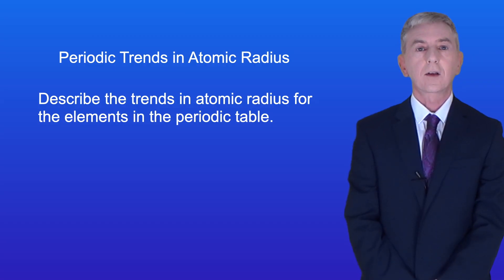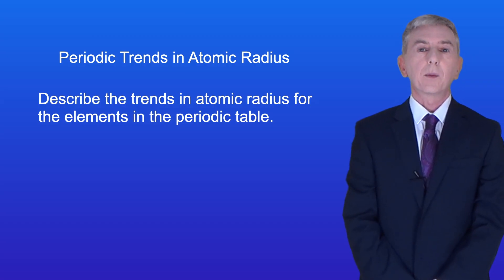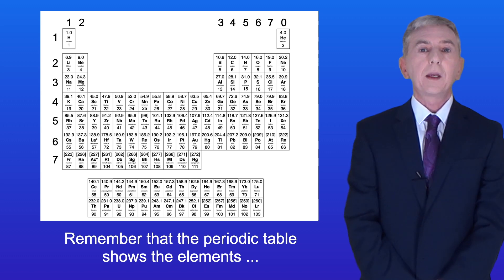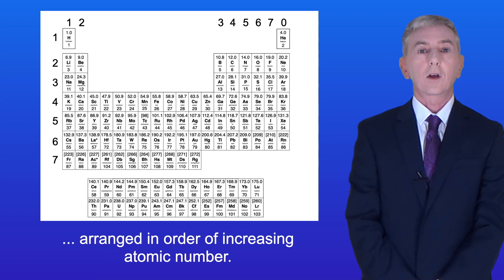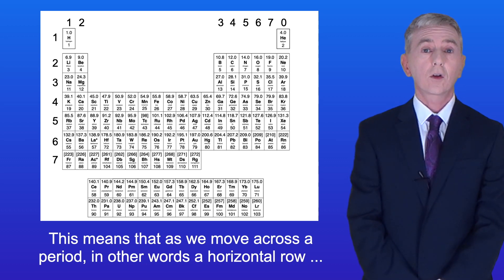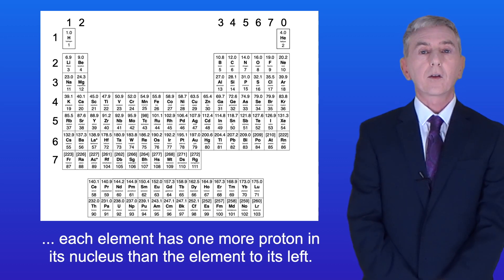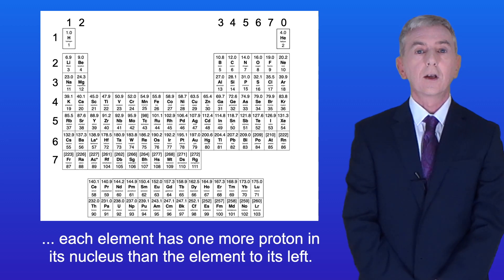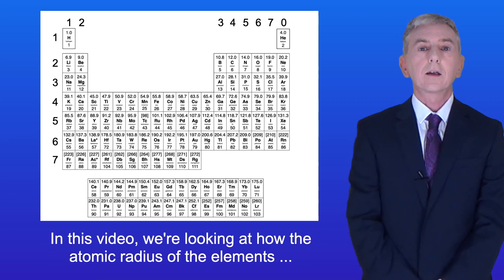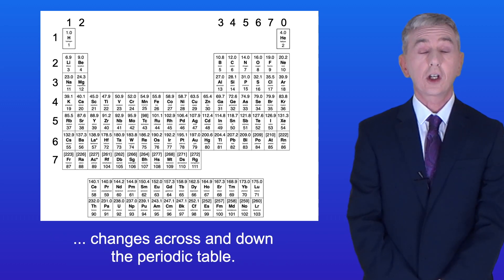Hi and welcome back to Free Science Lessons. By the end of this video you should be able to describe the trends in atomic radius for the elements in the periodic table. Remember that the periodic table shows the elements arranged in order of increasing atomic number. This means that as we move across a period — a horizontal row — each element has one more proton in its nucleus than the element to its left. In this video we're looking at how the atomic radius of the elements changes across and down the periodic table.